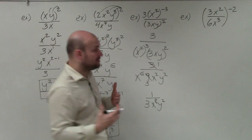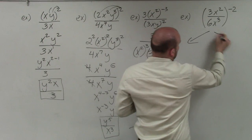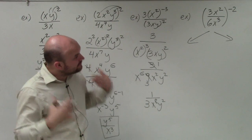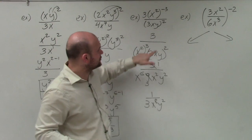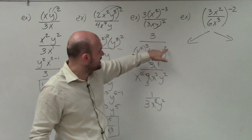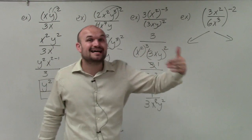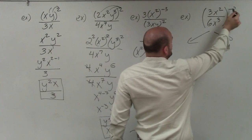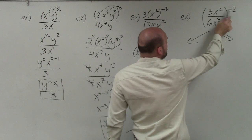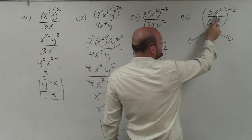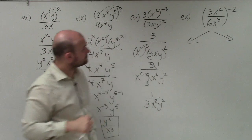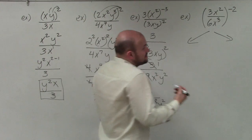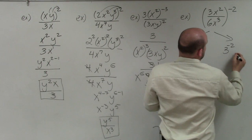Now, the power to product rule states that when you have a product raised to a power, you distribute that power to every single term inside. That is exactly the same for the quotient rule: when you have a quotient raised to a power, you distribute that power to the numerator and to the denominator. In this case, I have a product in the numerator and a product in the denominator, so everything is going to be raised to this negative second power.